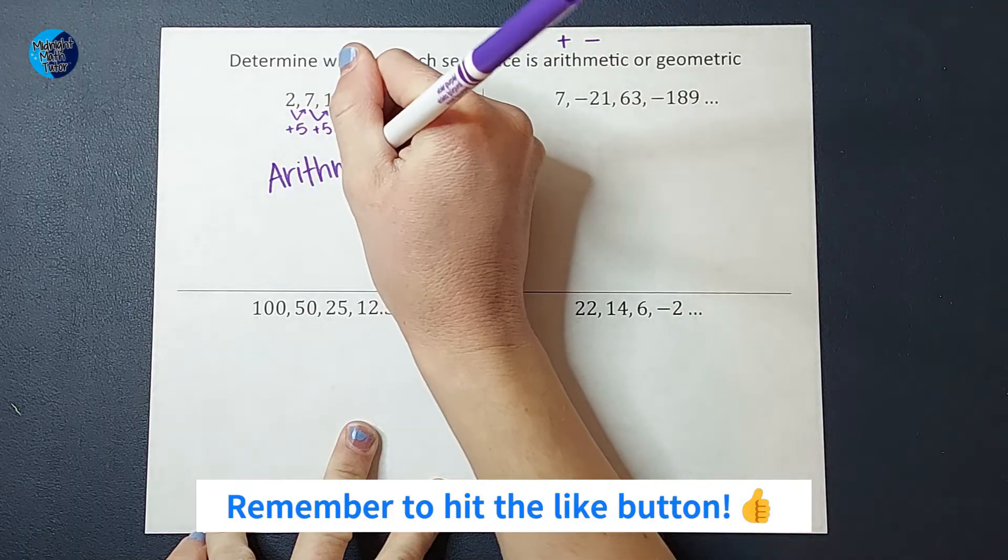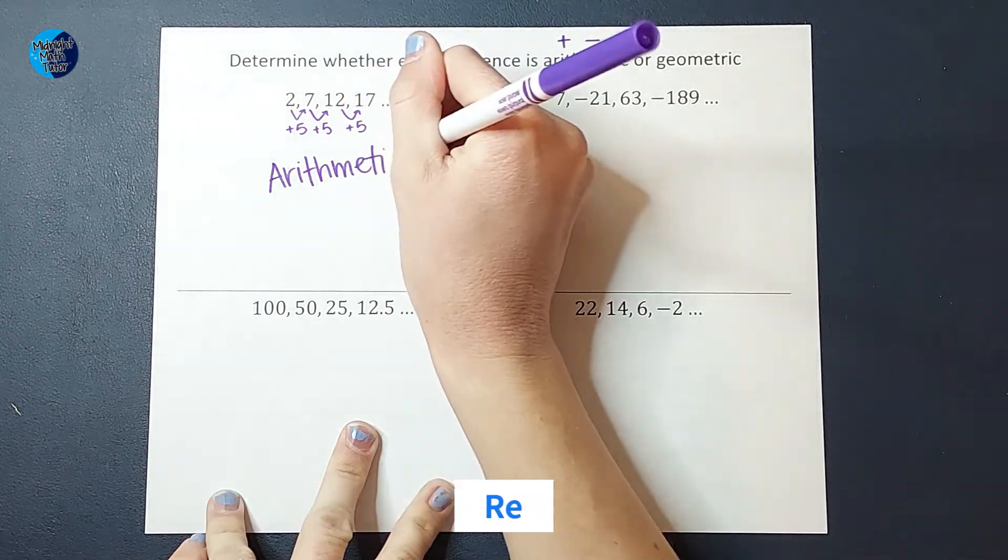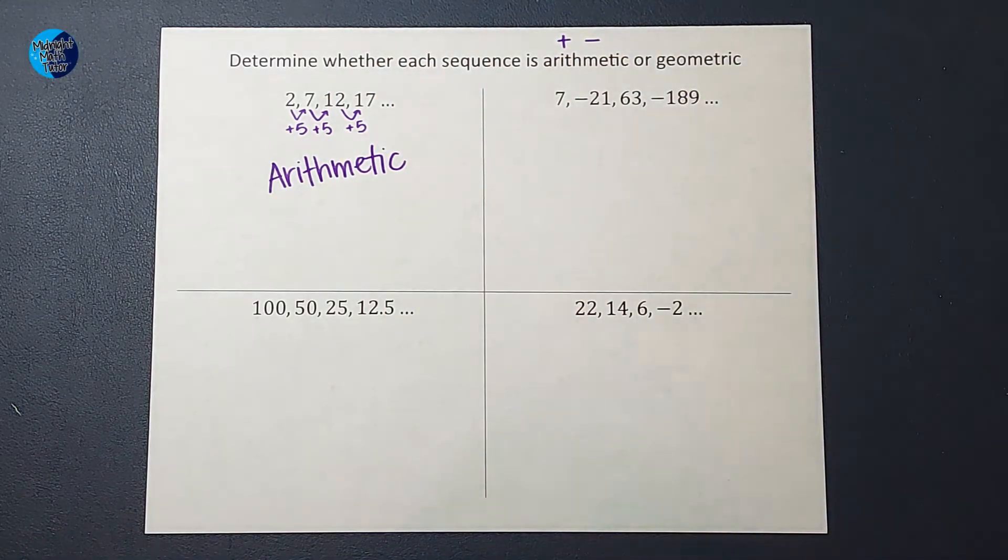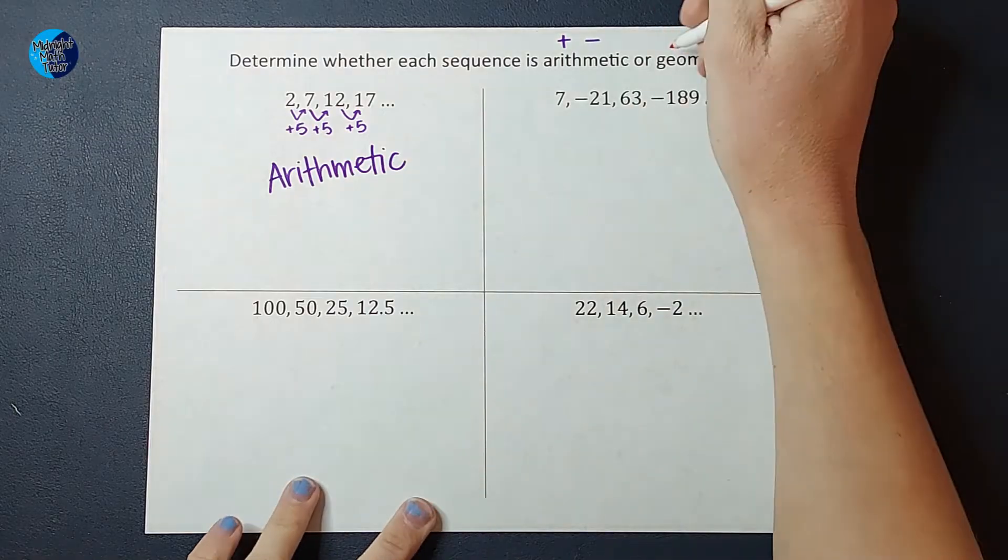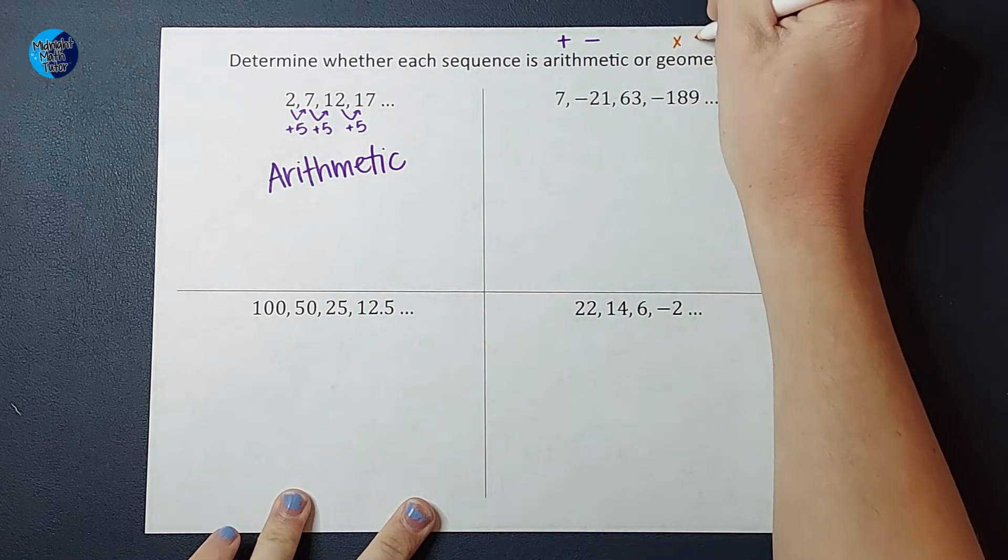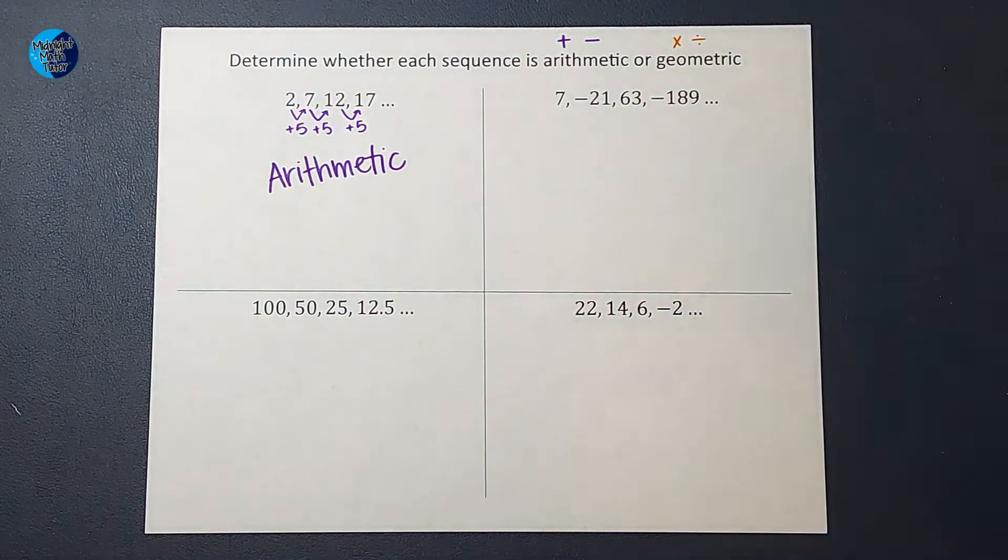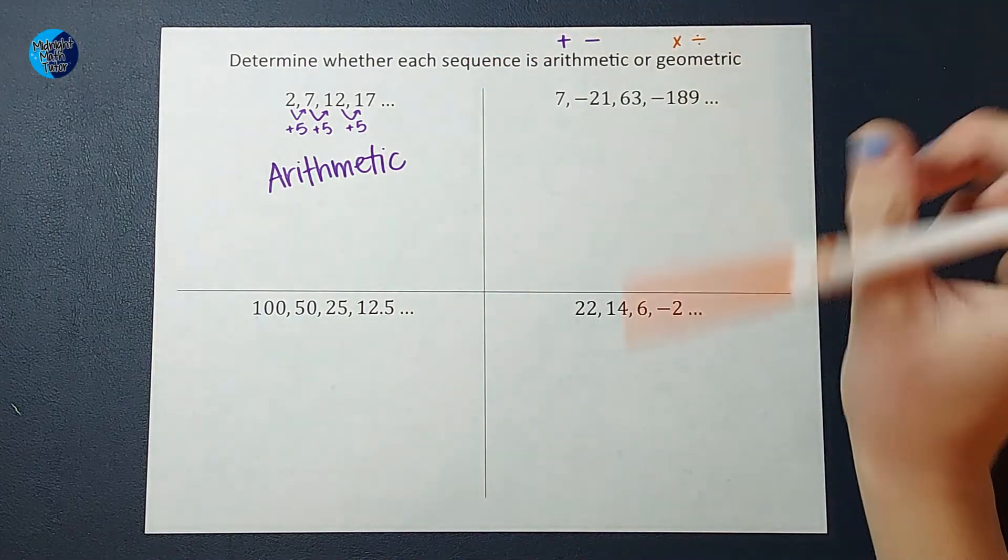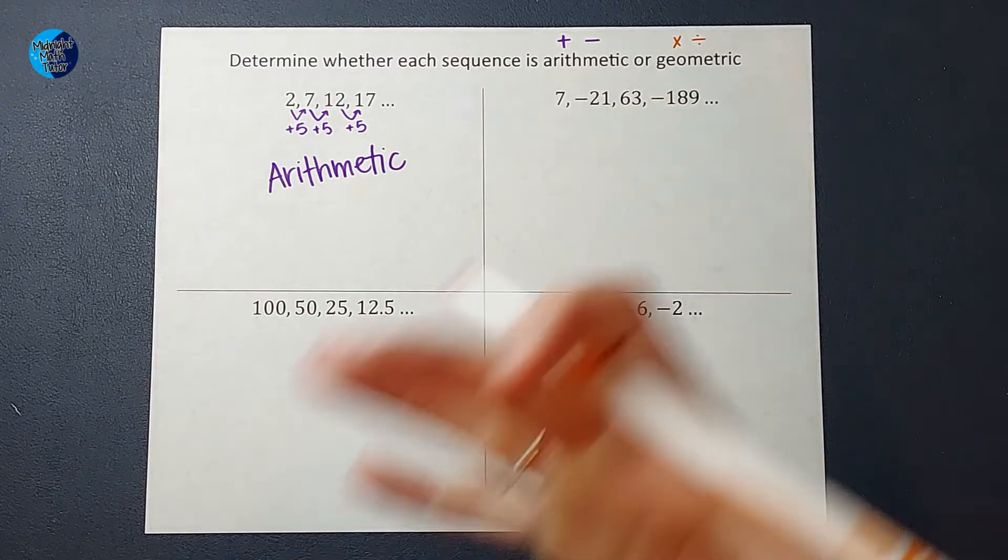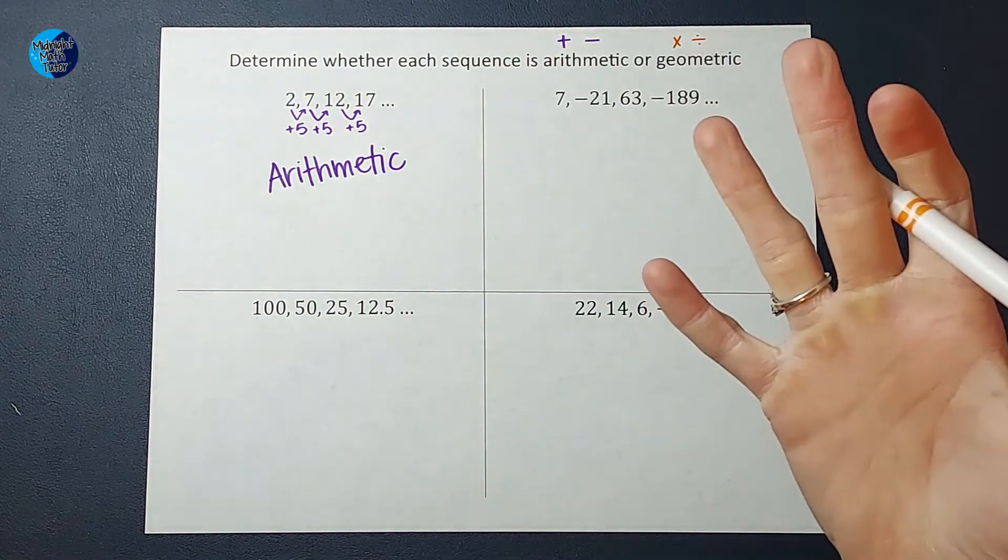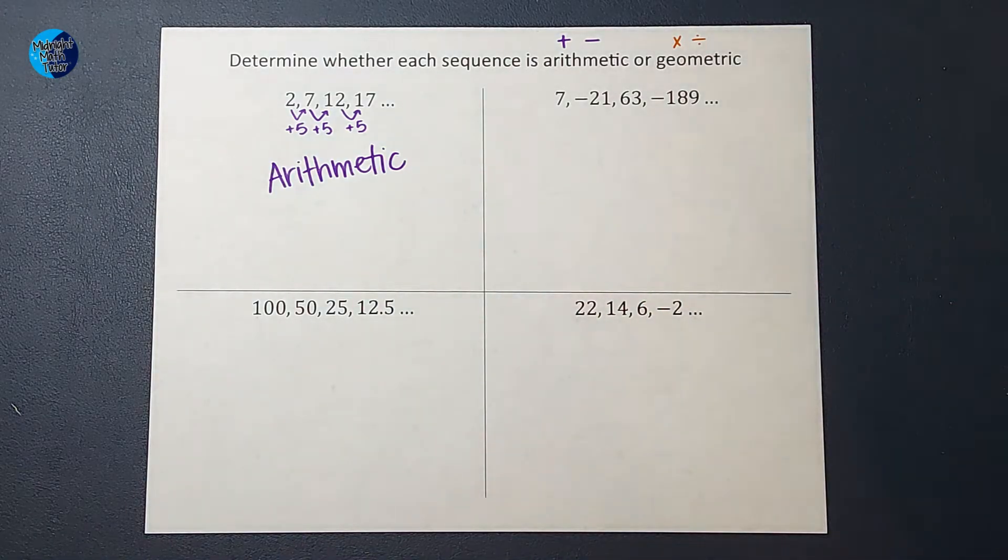Now you can probably guess what geometric means then. Geometric means we are multiplying or dividing by the same number over and over and over again. Or oftentimes with sequences, instead of saying divide, we'll say multiplying by a fraction, but it's really the same thing. So that's what a geometric sequence is.